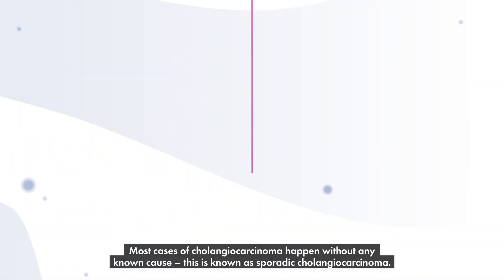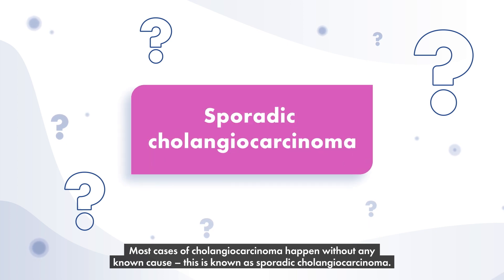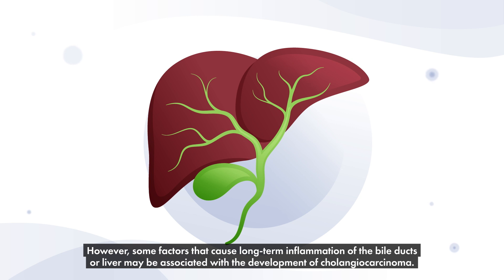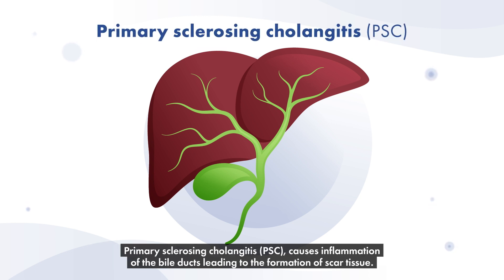Most cases of cholangiocarcinoma happen without any known cause. This is known as sporadic cholangiocarcinoma. However, some factors that cause long-term inflammation of the bile ducts or liver may be associated with the development of cholangiocarcinoma. Primary sclerosing cholangitis causes inflammation of the bile ducts, leading to the formation of scar tissue.